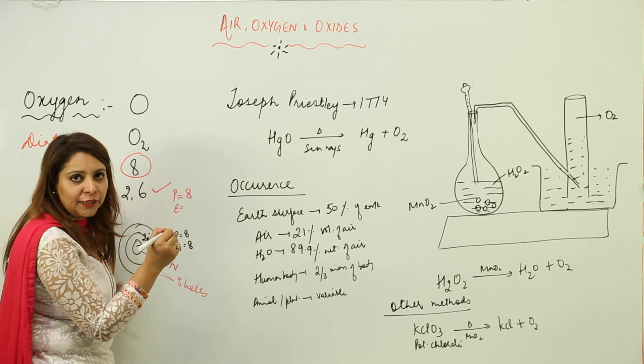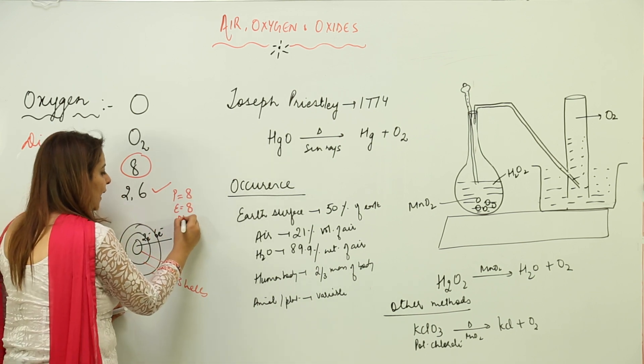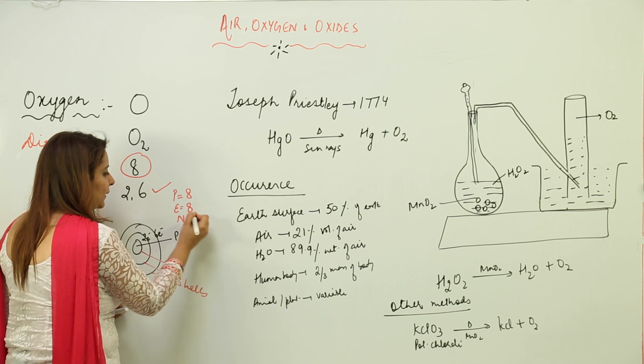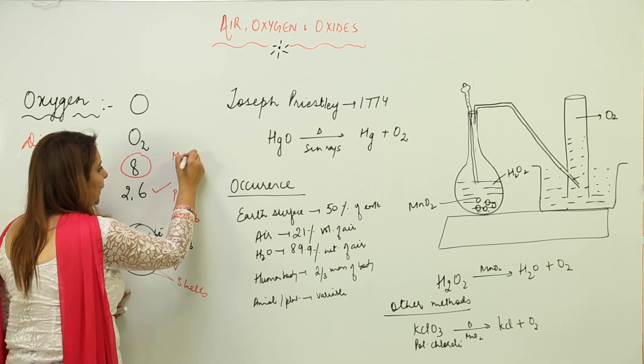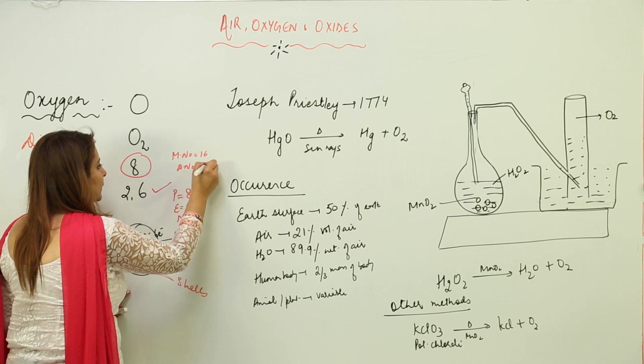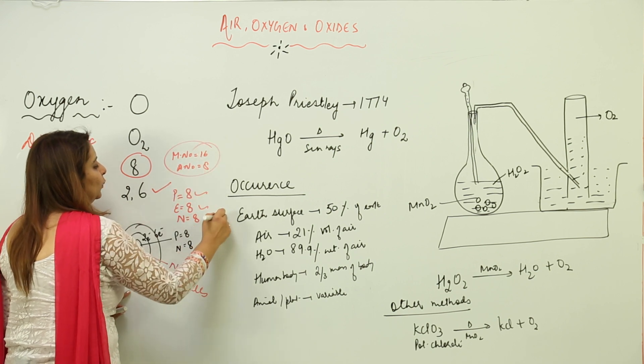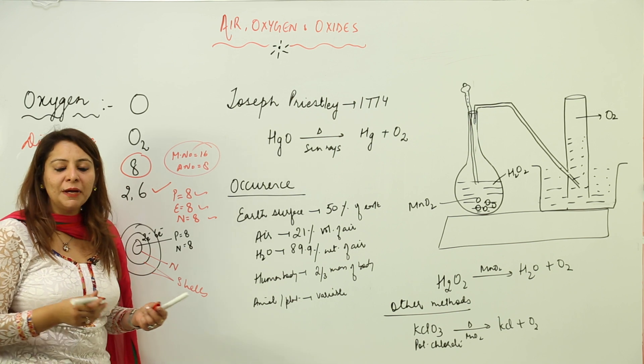How many protons, neutrons, and electrons are there? Because the atomic number is 8, protons are 8. And we know that atoms are neutral, so that means electrons are 8, and neutrons are also 8 because its mass number is 16 and atomic number is 8.